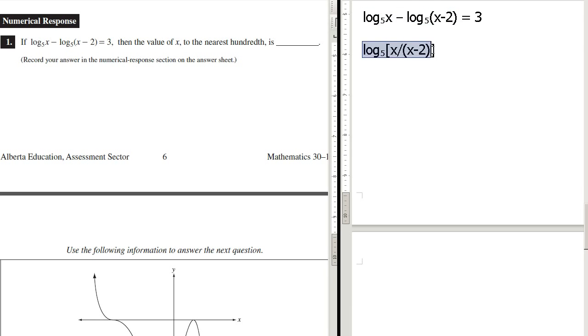So in other words, I just took that and I rewrote it as that. Because we have subtraction of two logs, we can divide one divided by the other inside of the log. That's how it works. Equals 3.